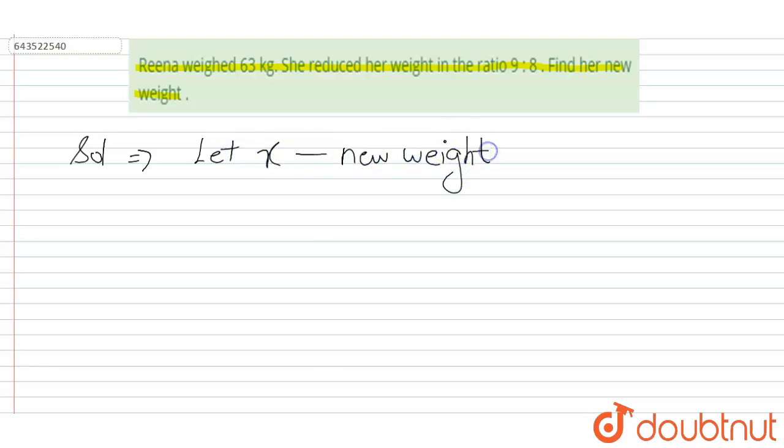As given in the question, she reduced her weight in the ratio 9 is to 8. We can write as present weight to new weight should be equal to 9 is to 8.